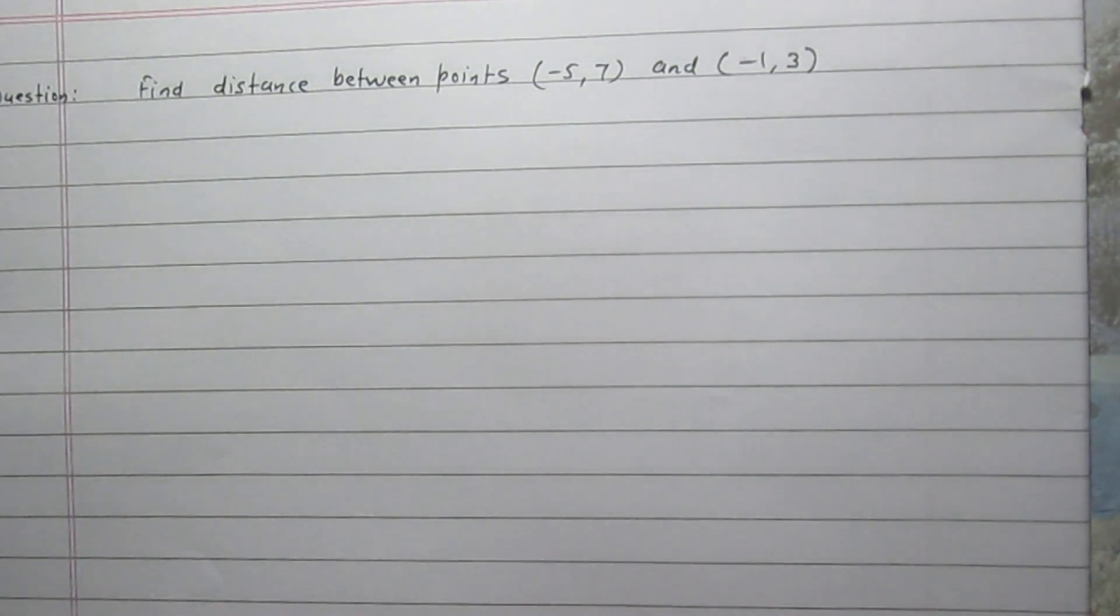Find distance between points (-5, 7) and (-1, 3). In this question, we are given two points and we are to find the distance between these two given points.